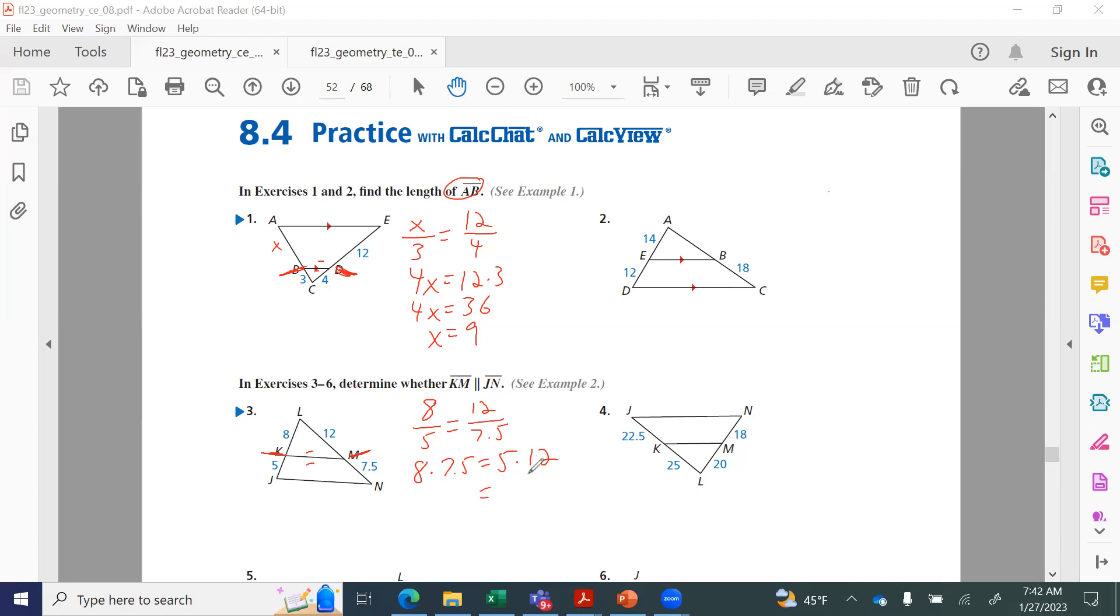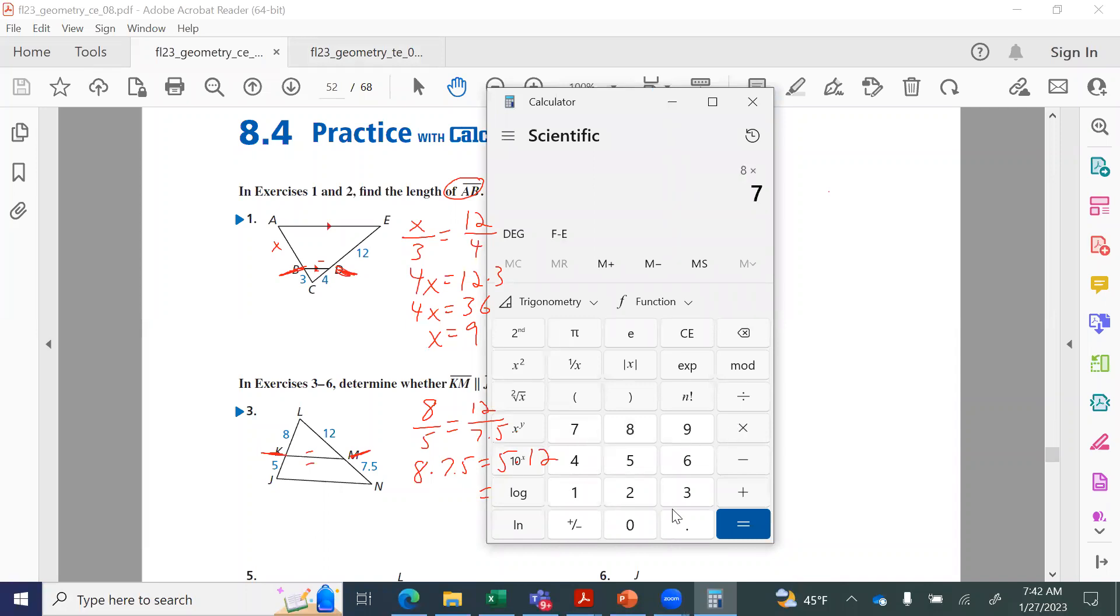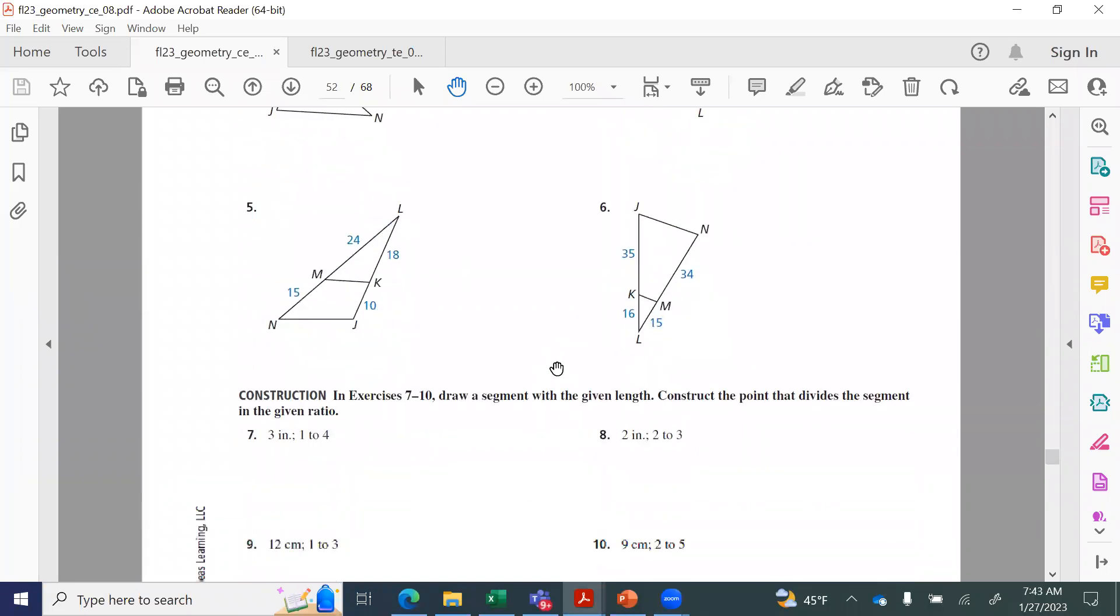You can do this a couple ways. In order for the lines to be parallel, the segments have to be proportional. So are they proportional? Well, you could either look at the two sides and say, if they're equal, here it's hard to tell if those are equal. So I'm just going to cross multiply. If I cross multiply and get the same value, then they are equivalent. So I'm going to do 8 times 7.5 equals 5 times 12. 8 times 7.5 is 60 and 5 times 12 is also 60. So since we get two values that are equal, then they are going to be proportional, so this would be yes to them being parallel.